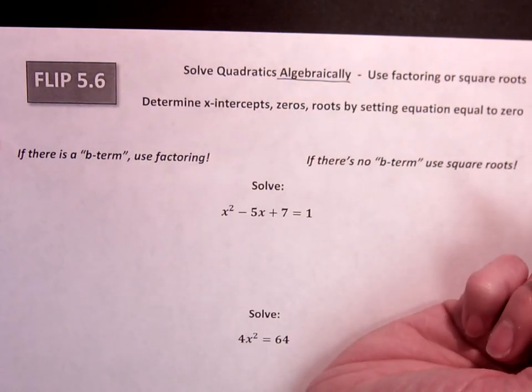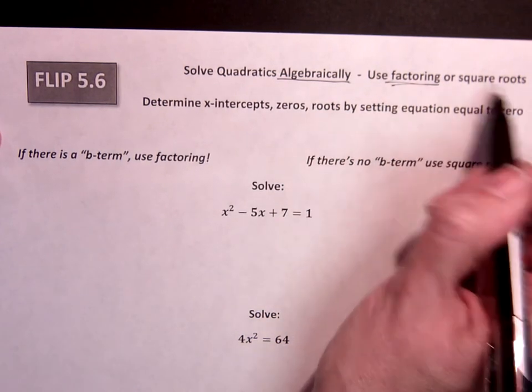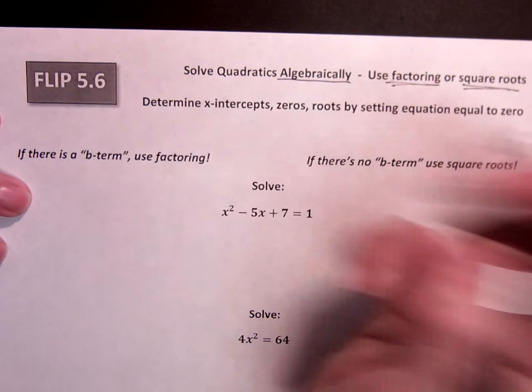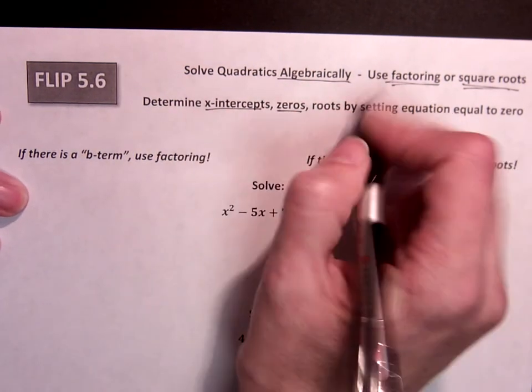And there's two methods we're going to start with. One is factoring and the other taking square roots. So again, there it is: x-intercepts, zeros, roots.